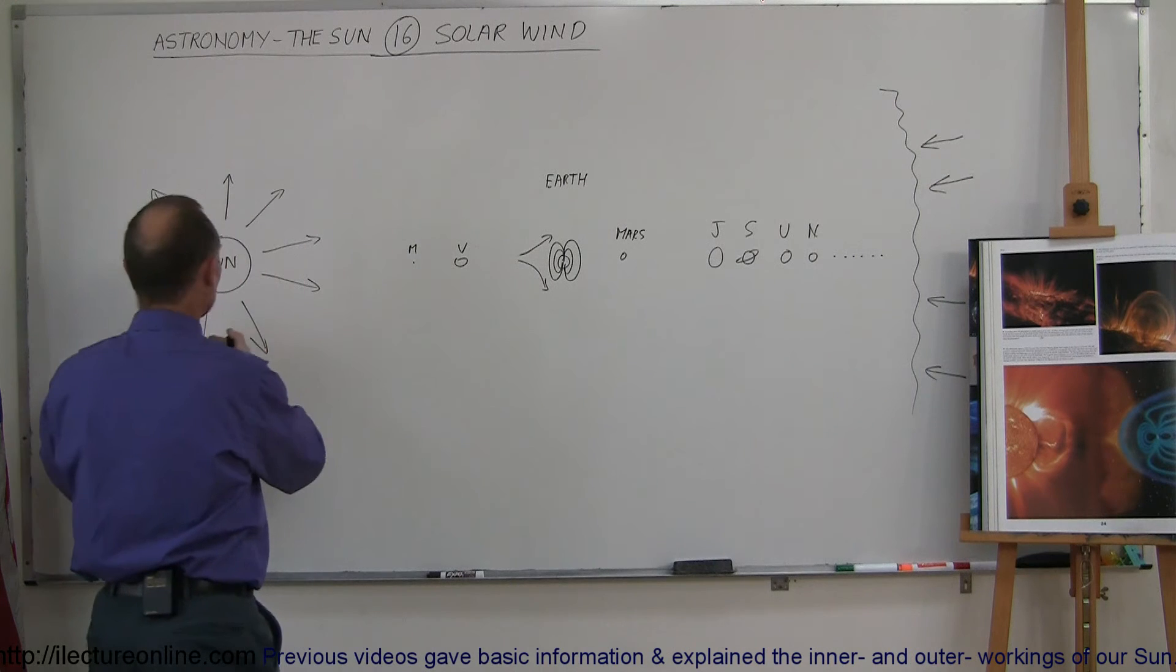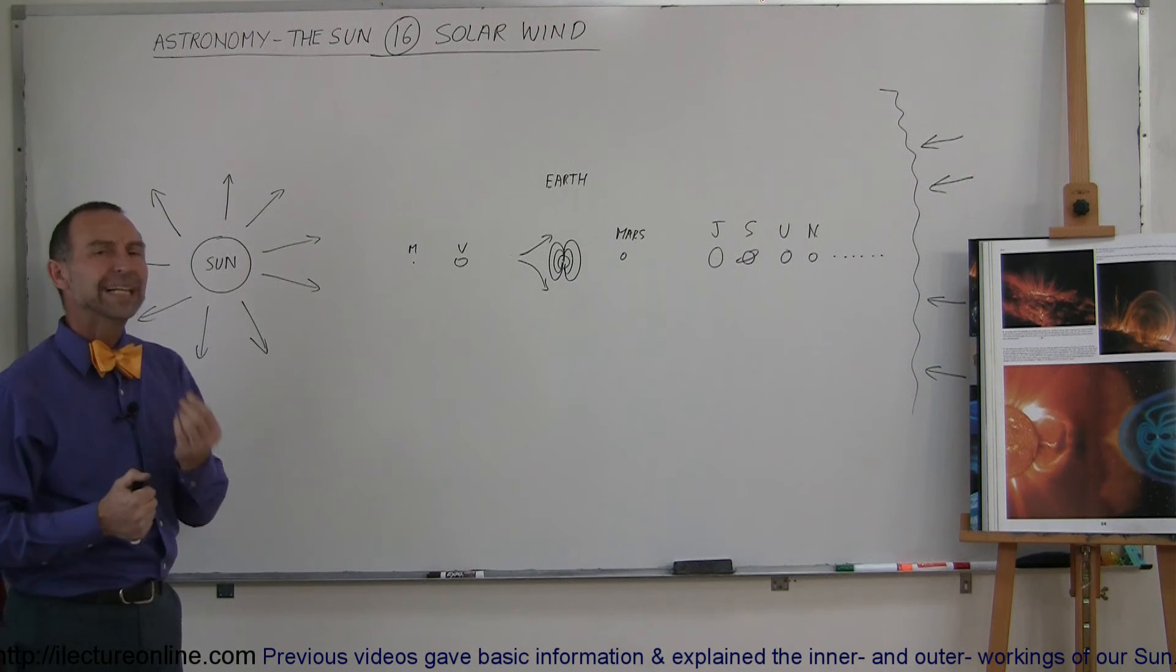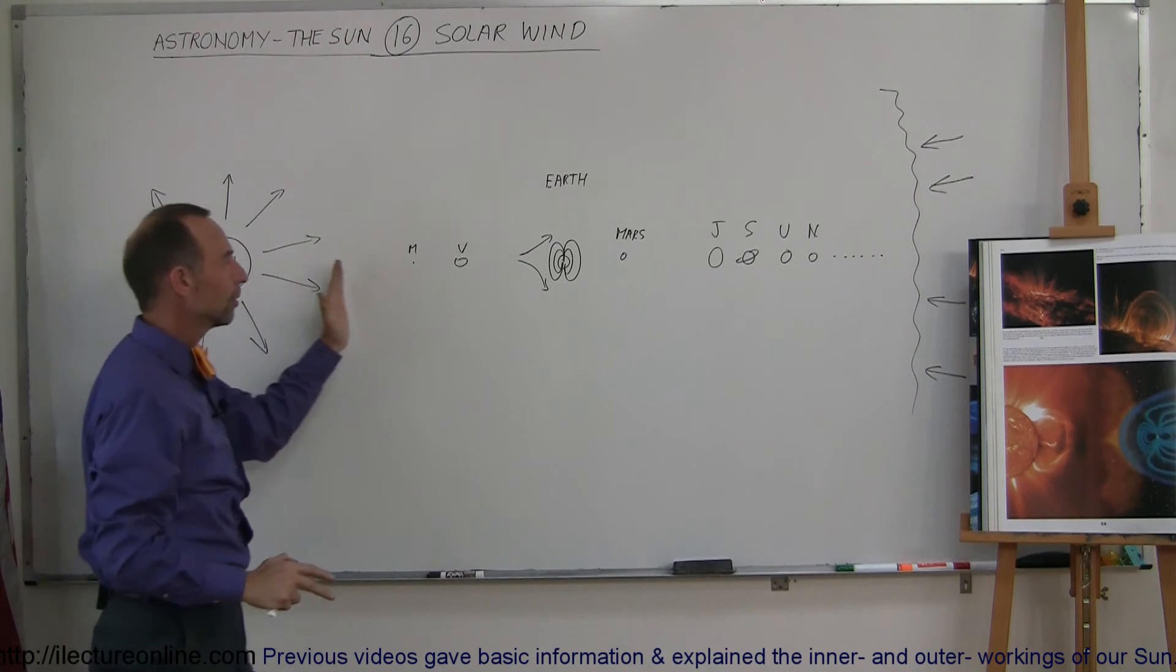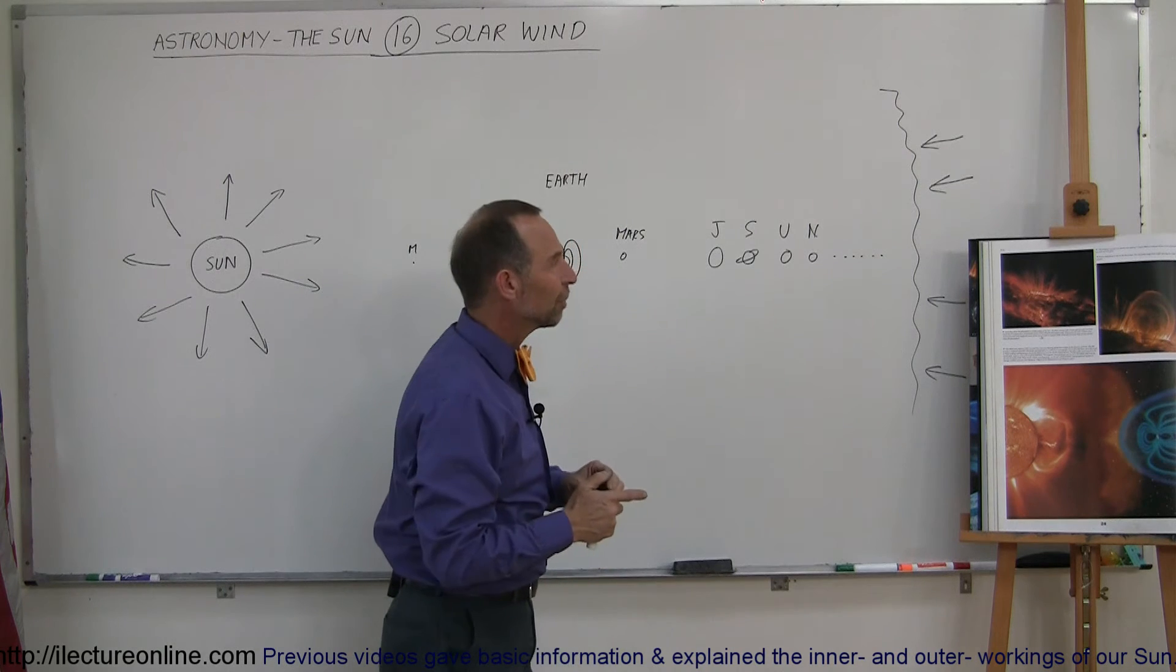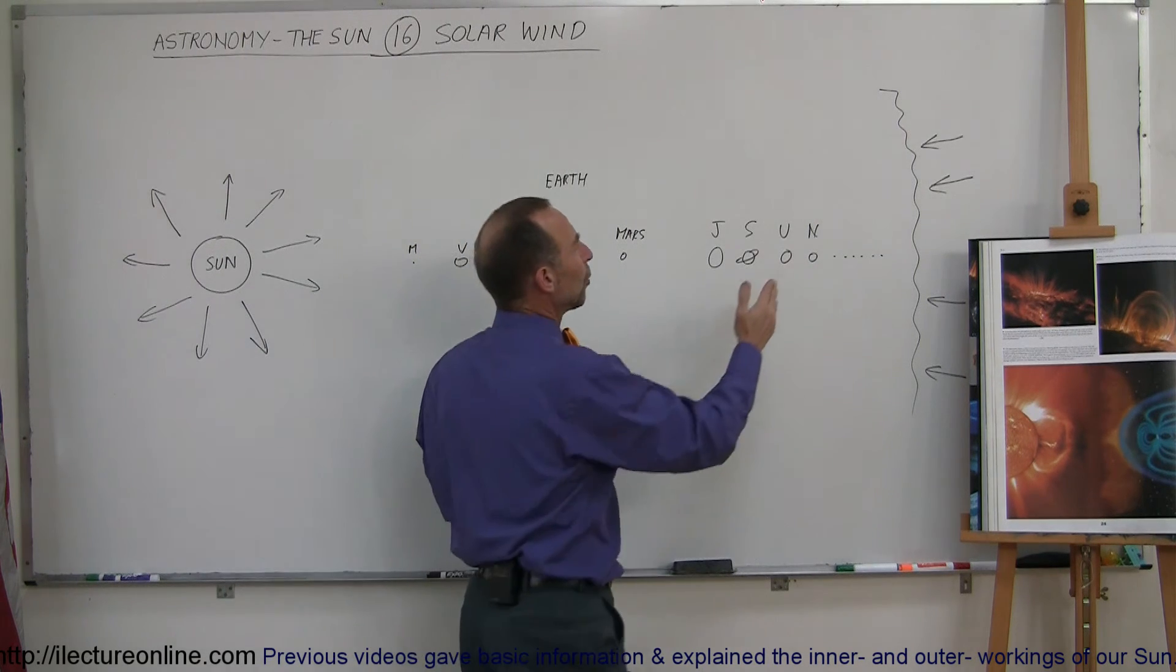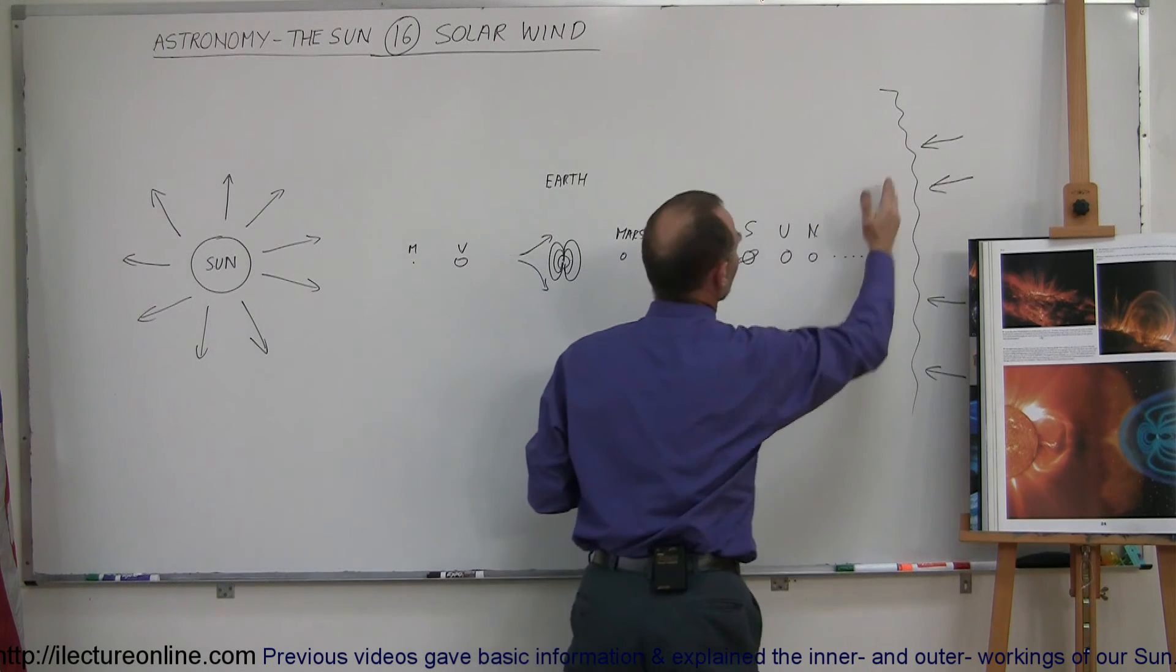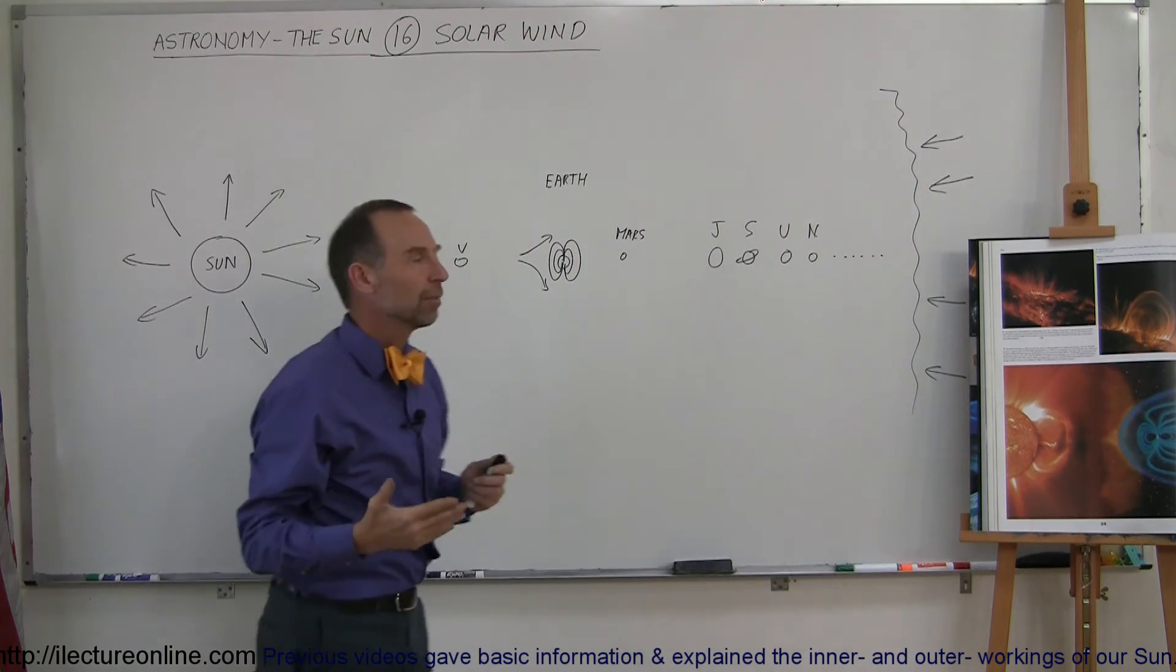So the solar wind which consists of electrons and protons to the tune of over a million tons every second get ejected from the Sun and spread in all directions of the solar system. It goes out for billions of miles until it finally reaches outer space. Outer space, the end of the solar system in a way, is the point where the radiation coming from space forms a boundary with the solar particles coming from the Sun, and where that region is, that's where the end of the solar system is at.